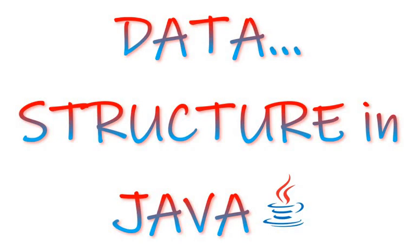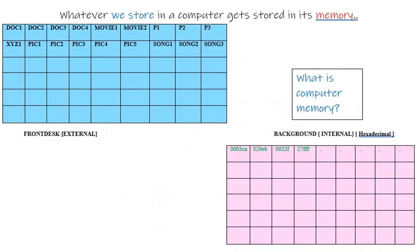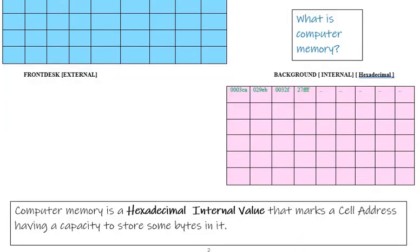Now, till now we saw whatever we store in computer goes and gets stored in its memory, and memory is nothing but a sequence of internal hexadecimal values. These internal hexadecimal values mark some numbers. Those numbers tell the capacity of the computer memory.